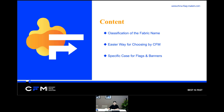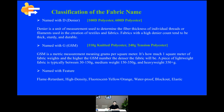I would like to start with the classification of fabric names to help you distinguish the fabrics. I have simply divided them into three types: named with D, named with G, and named with features. Let's go with the first one — named with D, for Denier. Denier is a unit of measurement used to determine the fiber thickness of individual threads or filaments used in the creation of textiles and fabrics. Fabrics with a high Denier count tend to be thick, sturdy, and durable, such as 100 Denier polyester and 600 Denier polyester. And clearly, 600 Denier polyester is thicker than 100 Denier polyester.